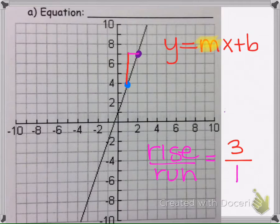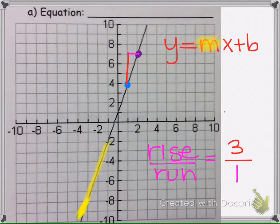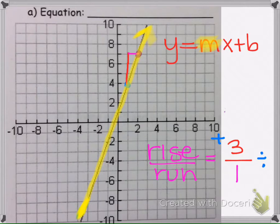To tell if the slope is negative or positive, we look at the graph from the left. From left to right, it's going upward — the line is rising. So that is how we know our slope is positive. So 3 divided by 1 is 3, meaning the number placed in front of the x is 3.